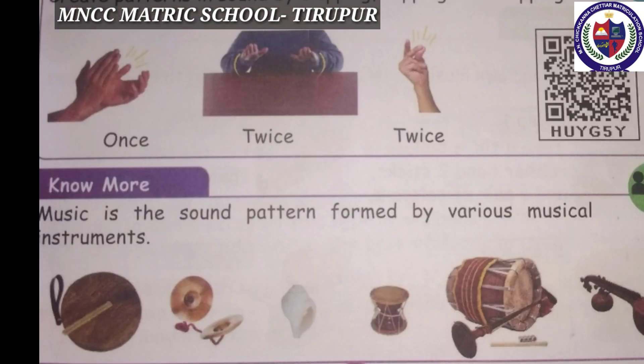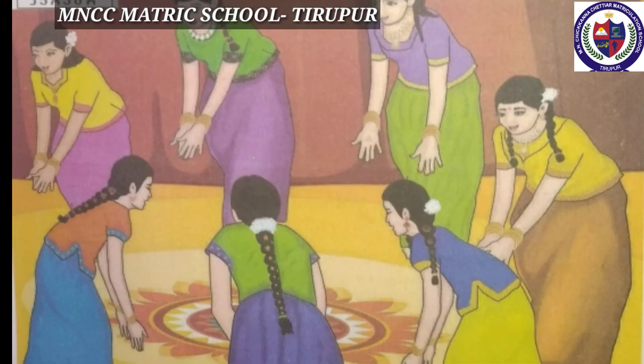Create patterns in sound by clapping, tapping, and snapping once, twice, twice. Music is the sound pattern formed by various musical instruments. See the picture — there are various musical instruments here. Sound patterns are formed by various musical instruments. Next: patterns in body movements and sound.